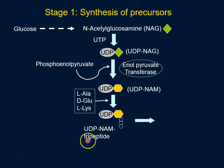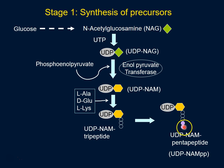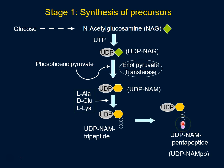Finally, we get this UDP-NAM that has a pentapeptide — five amino acids — attached to it, and that's the abbreviation we're going to use. Now, where do these two amino acids come from? Let's look at that.